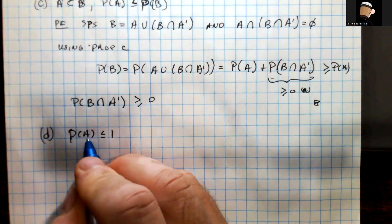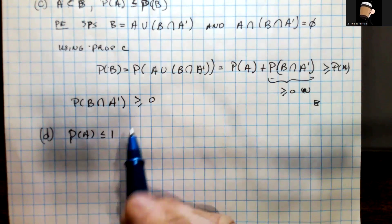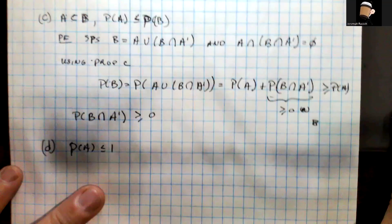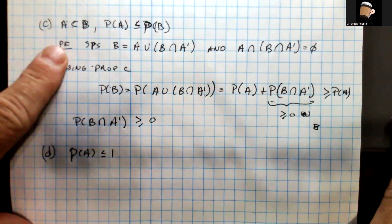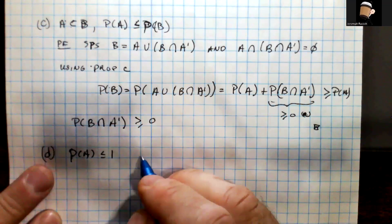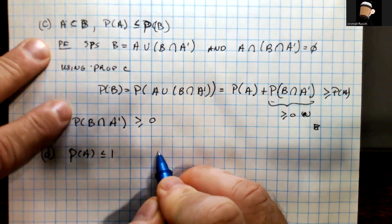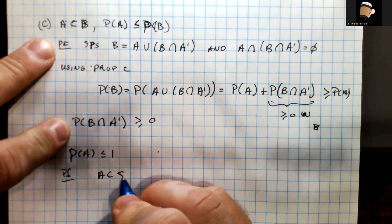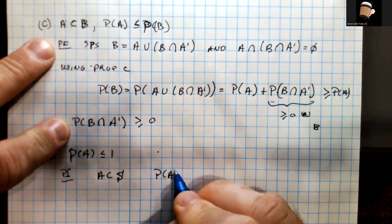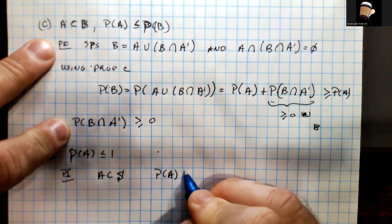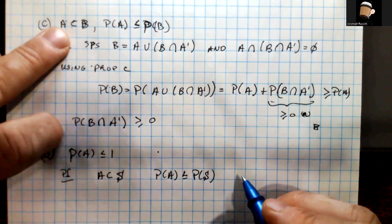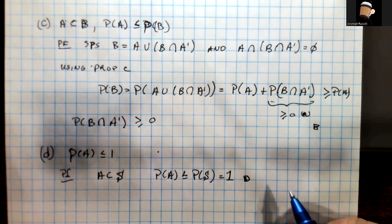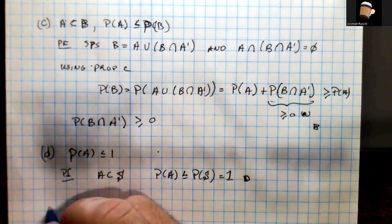Part D: we assume A is an event and we want to show P(A) ≤ 1. We use the combination of part C from our proof and property B of the definition. Since A is a subset of the sample space S, by part C we have P(A) ≤ P(S), and by property B, P(S) equals one. So P(A) ≤ 1 follows directly.